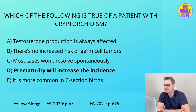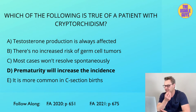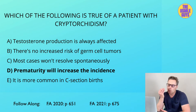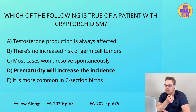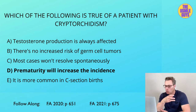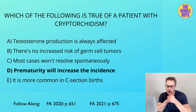The correct answer here is D. Cryptorchidism is the term we use to describe an undescended testicle or undescended testicles. One of the problems associated with this is it's going to negatively impact spermatogenesis because a testicle in the inguinal canal will be hotter than that optimal temperature for sperm production, which is under 37 degrees Celsius.